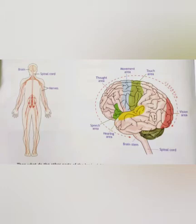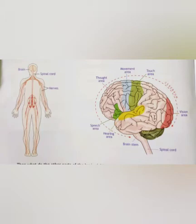Our brain does not function alone — it needs an assistant. This assistant is called the spinal cord and the messengers that help the brain are called nerves. The brain, spinal cord and the nerves form the nervous system in our body. In our previous sessions we have learnt about the digestive system, excretory system, respiratory system and musculoskeletal system. In this lesson we will be learning about our nervous system.